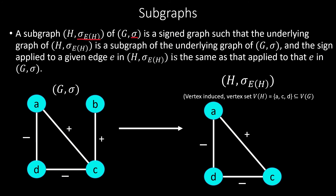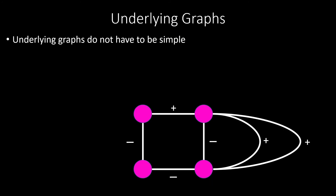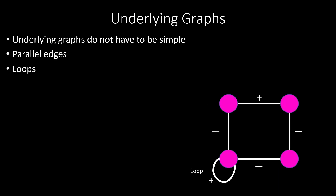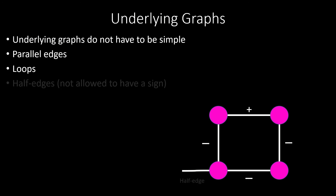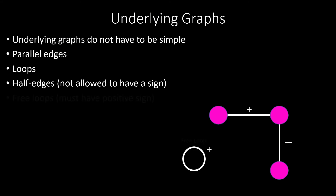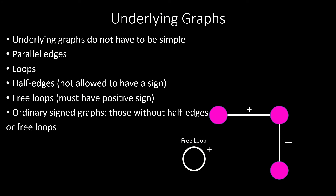A signed graph's underlying graph does not have to be simple. We can have parallel edges, loops, half edges — which must not be given any sign — and free loops, which must be given a positive sign. For this video, though, we'll only be considering ordinary signed graphs, which are those that lack half edges or free loops.